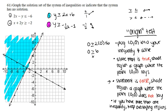Following the same origin test for the second inequality, we plug in (0, 0), giving us 0 is greater than or equal to negative one-half times 0 minus 1, which simplifies to 0 ≥ -1. This is a true statement because zero is greater than negative one. Since it's true, we shade the region where (0, 0) lies — which is above the second line.